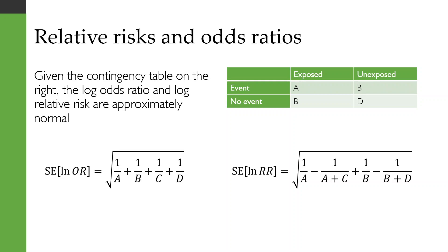As I mentioned, the lognormal distribution is often useful for relative risks and odds ratios. So if we have the contingency table as shown on the right here, this column is people who are exposed to some treatment. This column is people who aren't exposed.